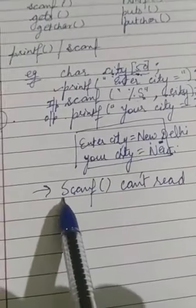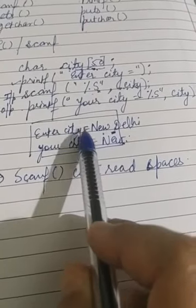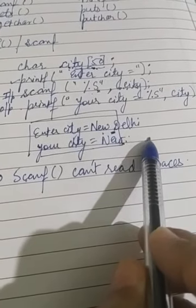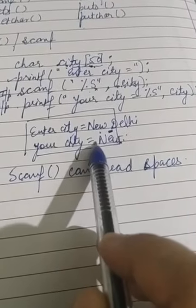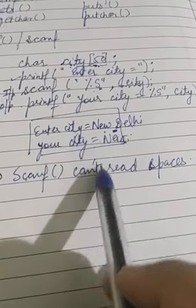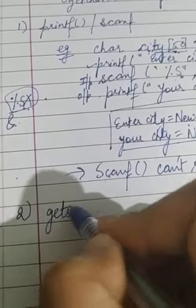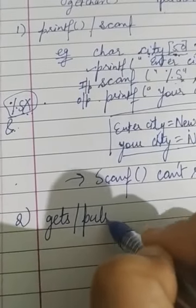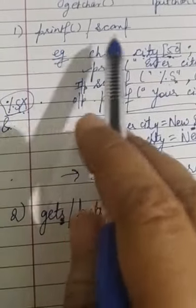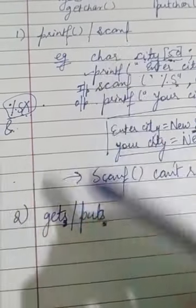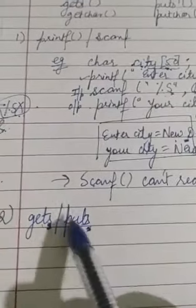So the solution is to use gets and puts — these are only for strings; they won't work with integers or floats. If you enter 'Patiala' (no space), scanf works fine, but if you enter a string with a space, scanf can't read after the space. That is why we move to gets and puts.